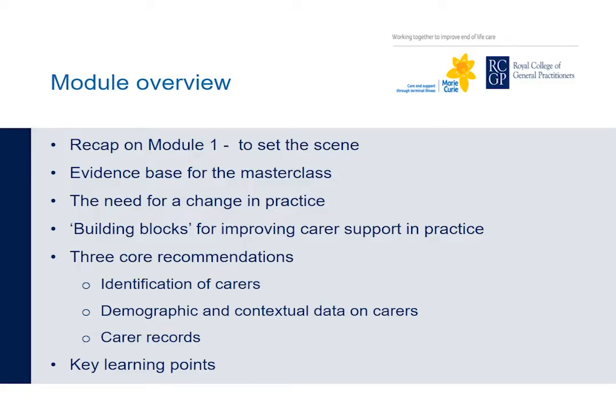We'll start with a very brief recap of what we covered in Module 1 to set the scene, then introduce you to the programme of research and implementation that forms the evidence base for this masterclass. To better support carers in palliative and end-of-life care requires some changes in practice, and we look at recommendations or building blocks for improving and sustaining carer support in practice. Then the module focuses on three core recommendations on identification of carers, demographic and contextual data, and carer records. We end with key learning points to take from Module 2.